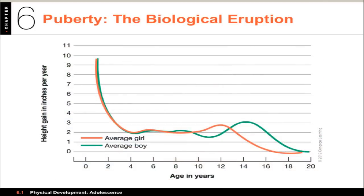One of the big things here is growth spurts. This chart shows how many inches the average American girl or boy grows per year. When they're really little they grow a lot, then it slows to about two inches, stabilizing from about age four to nine. Girls have a growth spurt first, while boys slow down around the same period and have their spurt a little bit later. Both have settled by age 20 at their adult height. Girls begin puberty around age 10, boys around age 12, although it varies substantially from person to person.